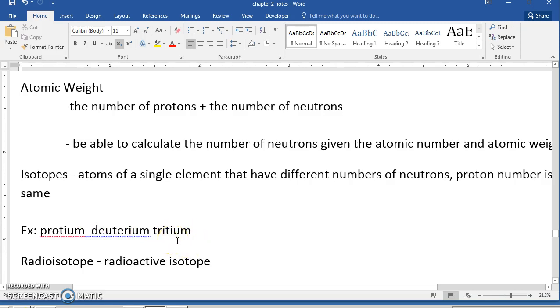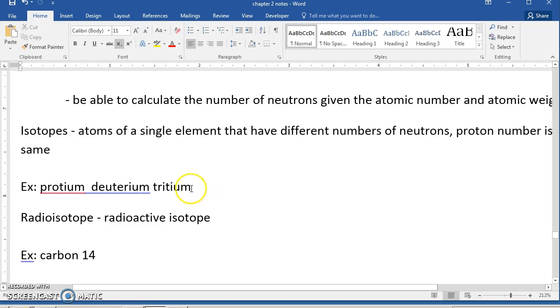Tritium happens to be radioactive, so it's described as a radioisotope. It's a radioactive isotope of hydrogen. Sometimes it's used in the face of watches and clocks so that they glow in the dark, and sometimes in night sights of firearms so that you're able to see the sight in complete darkness.